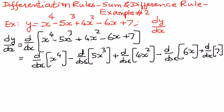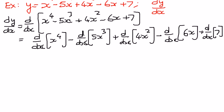Therefore, now we are ready to apply the differentiation. These terms are in the power rule format and the constant times the power rule format. For the first term, d by dx of x to the power of 4, n is equal to 4, so we can write this as 4x to the power of 4 minus 1, which equals 4x to the power of 3.